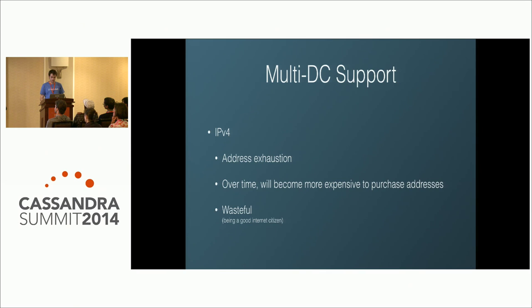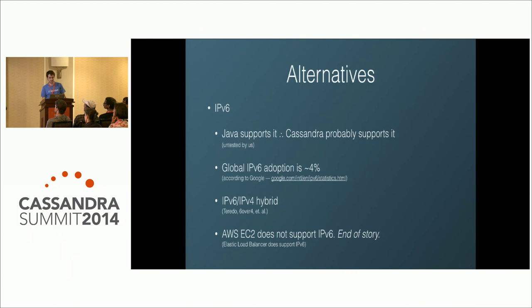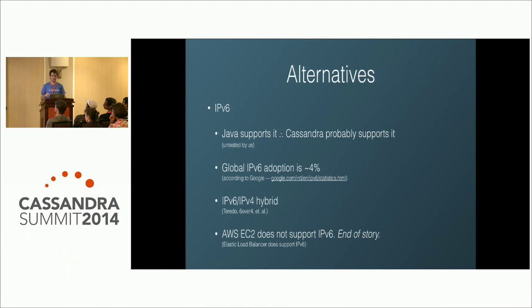One option is IPv6 — Java supports it out of the box and Cassandra likely does too, with some mailing list posts confirming it works. However, global IPv6 adoption is approximately 4% according to Google. IPv6-to-IPv4 hybrid approaches like Teredo tunneling or 6over4 require data centers to run IPv6 internally — and Amazon EC2 doesn't support IPv6. So for us, that's a non-starter.